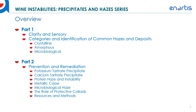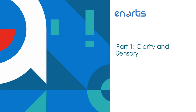In this series, we have two parts. This is part one, where we're going to be going over clarity and sensory, and then looking at the categories and identification of common hazes and deposits, them being crystalline, amorphous, and microbiological. In the second part of this video series, we'll be going into more prevention and remediation. So, part one: clarity and sensory.